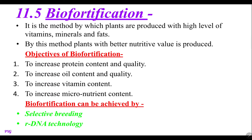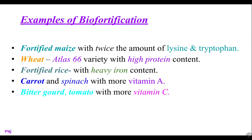Biofortification can be achieved by two processes: one is selective breeding and the second one is rDNA technology, that is recombinant DNA technology. There are a number of examples of biofortification — these examples are also important. First example is fortified maize with twice the amount of lysine and tryptophan. These two contents are important and thus a new variety is formed.